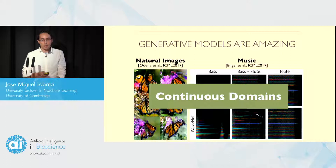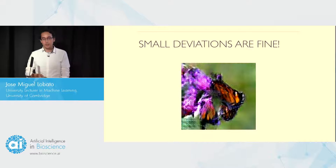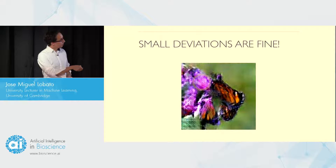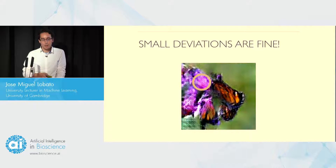When you generate synthetic data in continuous domains, you are more or less tolerant to small misspecifications in the samples that you generate. For example, this is a synthetic image generated by one of these models. We can see that there are some imperfections — the image can be blurry or there is some part of the background that appears — but we can still identify this as a butterfly. The quality of the sample is still reasonable.